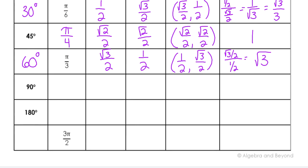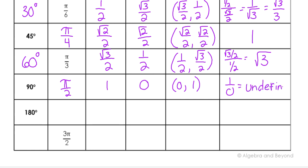Last few special angles. 90 degrees — that's the first quadrant boundary, which is pi over two in radians. Thinking about that sticking straight up, it has a y-coordinate of one and an x-coordinate of zero, so it's at the point (0, 1) straight up from the origin. When I divide that, I do one over zero, and that is undefined — we cannot divide by zero. So the tangent of 90 degrees is undefined.